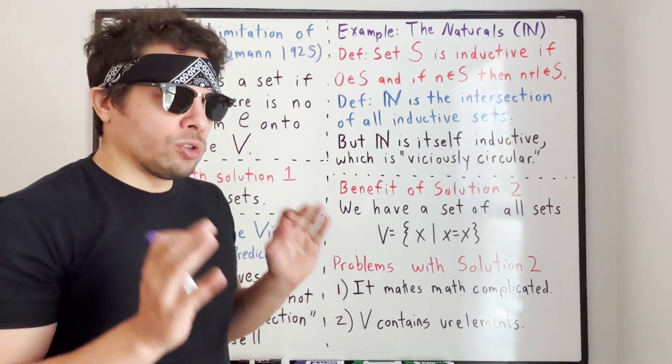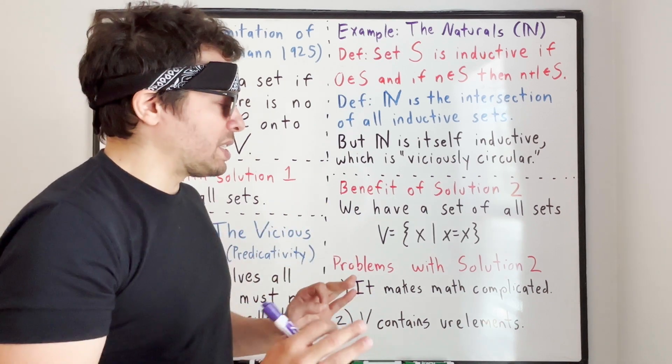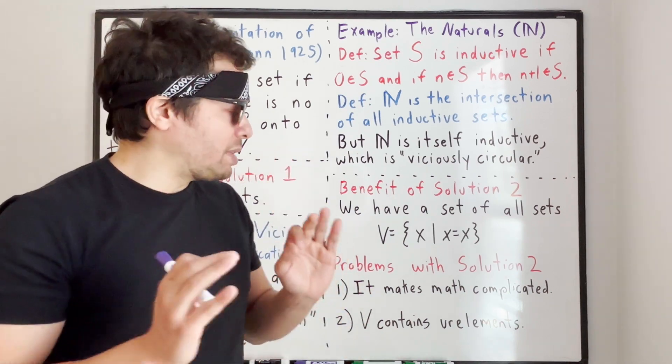It wasn't strictly adherence to the vicious circle principle. Long story short, if you want to strictly adhere to the vicious circle principle, it makes math extremely complicated.